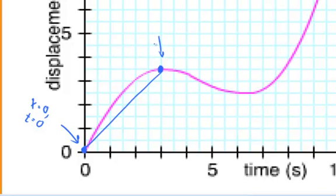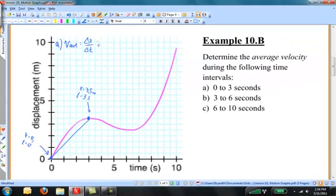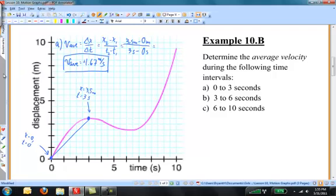Let's say that our x2 minus x1 over t2 minus t1 is going to be 3.5 meters minus 0 meters divided by 3 seconds minus 0 seconds. And now you put that in the calculator. This object had an average velocity of plus 1.67 meters per second. Sometimes the velocity was a little faster. Sometimes it was a little slower. But on average it was 1.67 meters per second.